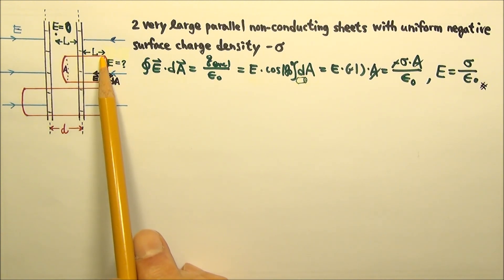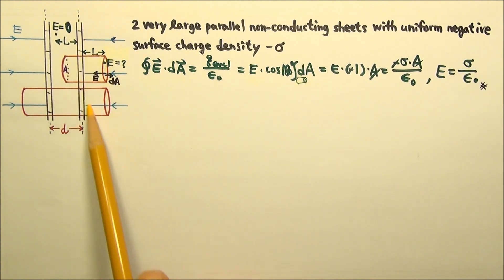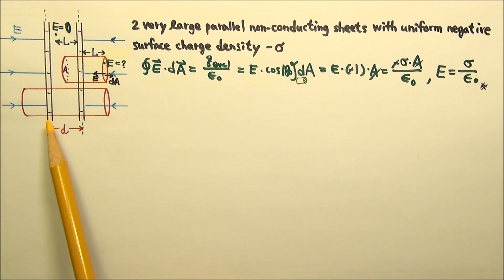The electric field does not depend on the distance L, which tells us that this electric field over here is uniform, as long as the sheets can be considered as very large compared to the distance L and the plate separation D.